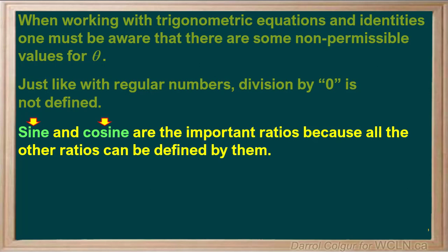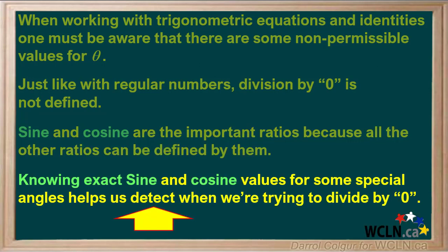Sine and cosine are the most important ratios because all other ratios can be defined by them. Knowing exact sine and cosine values for some special angles helps us detect when we're trying to divide by zero.